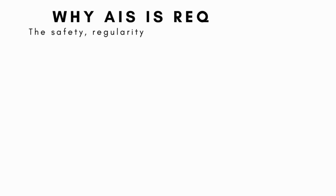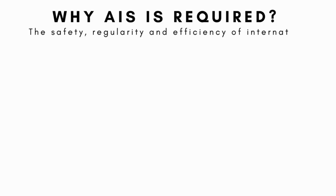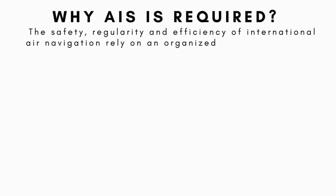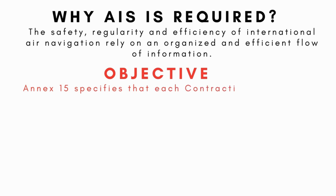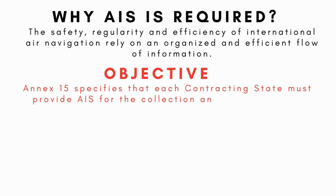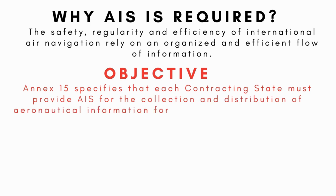Imagine the world of international air travel as a vast network of pathways in the sky. To keep planes flying safely and on time, it's crucial to have a smooth and well-organized flow of information. A special guidebook called Annex 15 lays out a mission for each country: every country must set up an aeronautical information service. This service is like a central hub that gathers and shares important flight information with all kinds of aircraft, ensuring everyone knows what they need to fly safely.